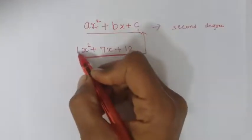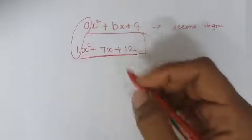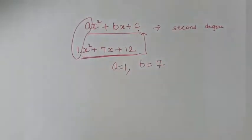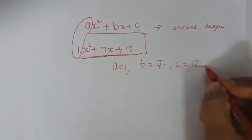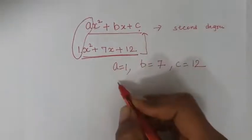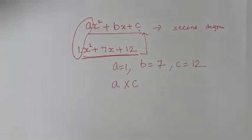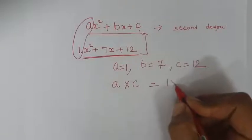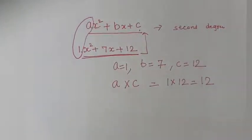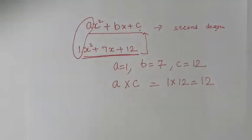On comparing, we can say: in place of A there is 1, in place of B there is 7, and in place of C there is 12. Now, multiply A and C. What do we get? 1 into 12 equals 12.